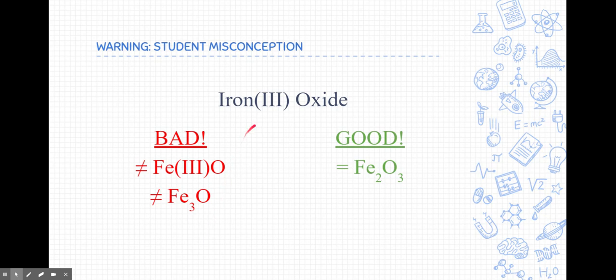Remember, the Roman numerals don't represent how many irons there are. It represents the charge of each iron in the compound. So the correct way to write this would be Fe2O3, because this iron has a charge of plus three. You need two of them. And the oxygen has a charge of minus two. You would need three of them.